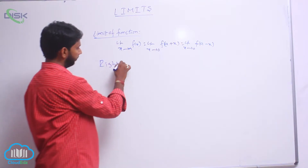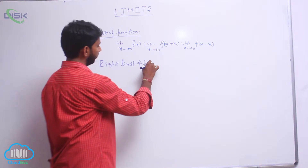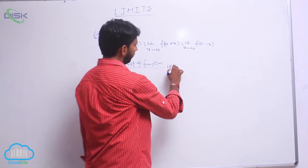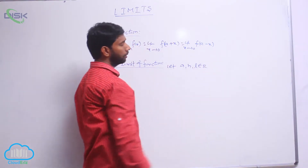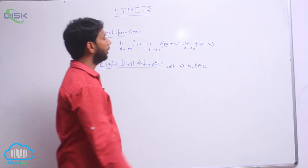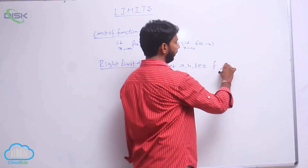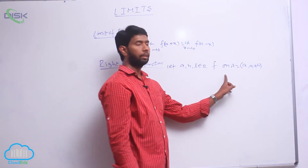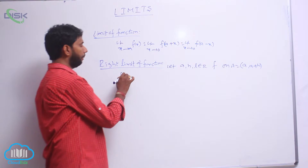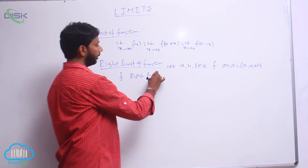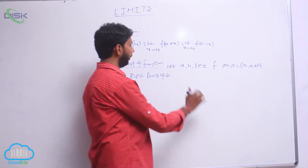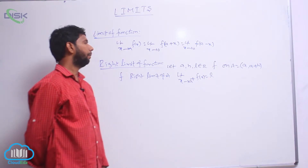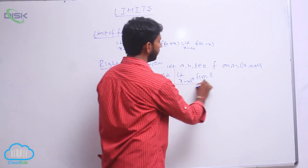Right limit of a function. Let a, h, l belong to ℝ, and let f be a function defined on capital A equal to (a, a plus h). Then f is said to have a right limit at a when limit x tends to a plus of f(x) is equal to l. Then f is said to be the right limit of the function.